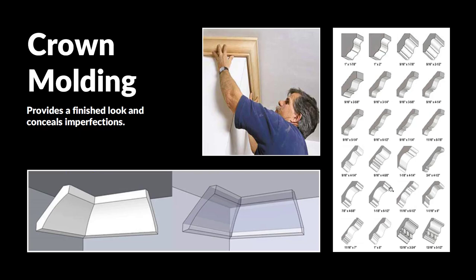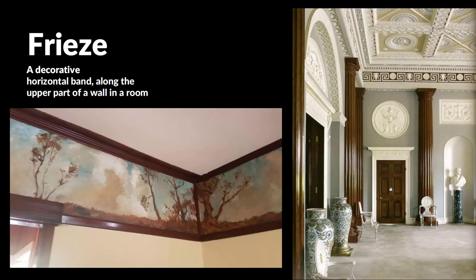Taking a closer look at crown molding: crown molding is what's at the very top of the wall where the wall meets the ceiling. It can have many different types of profiles mitered at both inside and outside corners. A crown molding can be very simple or very elaborate, but it provides a really finished look and will also help conceal imperfections if there are issues with plaster or drywall, especially in older buildings. So it can finish a room and also hide some imperfections.